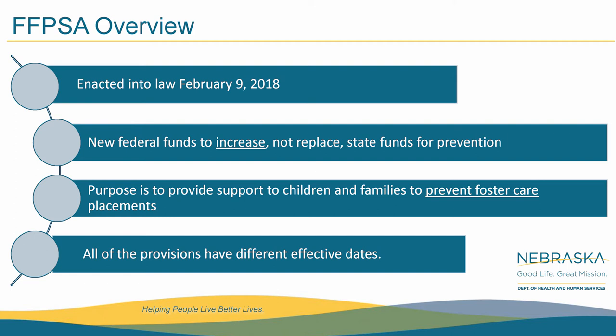50% nationally was used for foster care. States had the option to implement the Family First Prevention Services Act October 1, 2019, or delay implementation. Nebraska chose to move forward October 1, 2019. One of the expectations is that the state develop a prevention plan. Also located in the pod is Nebraska's Family First Prevention Plan — please note that this is a draft as the state is waiting for final approval from the Children's Bureau.